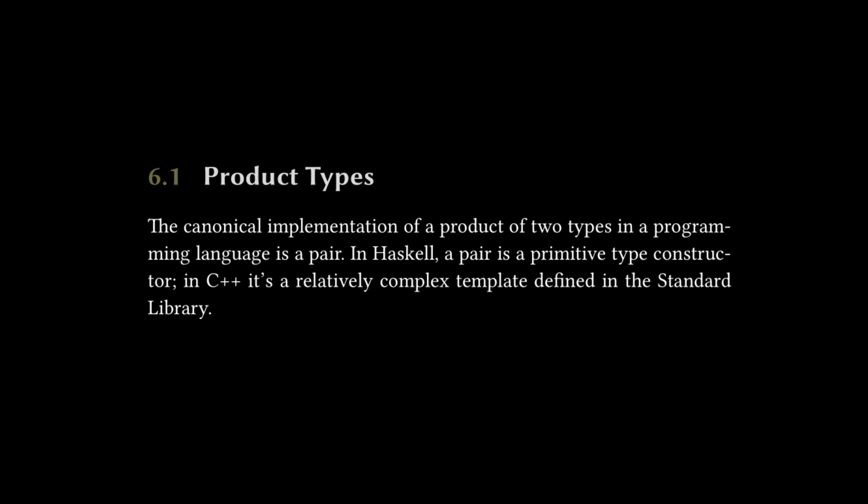So whenever you're using a class or using a struct in which you're adding strings, integers, primitive types, or other user-defined types to that class, and they are all combined together, you can think of it as logical ands in between those types. That is a product type.